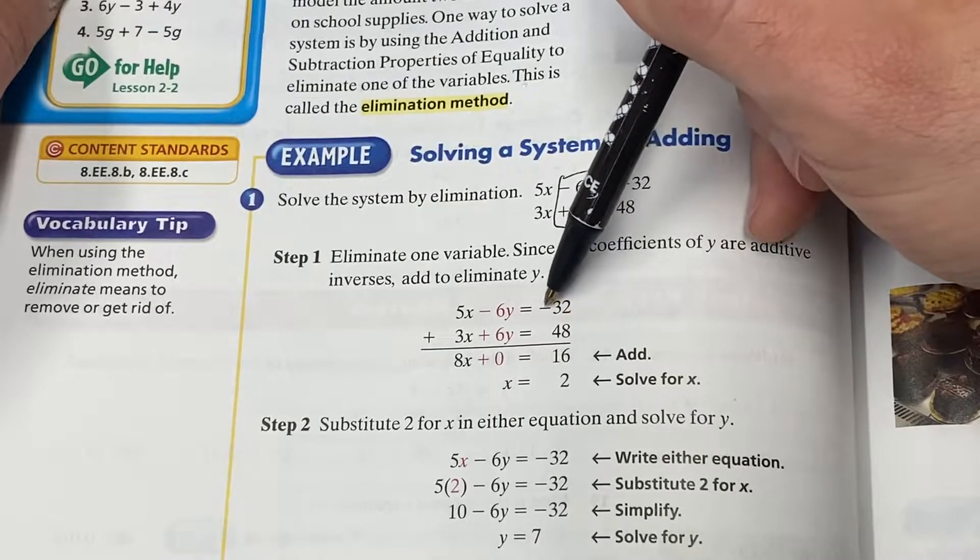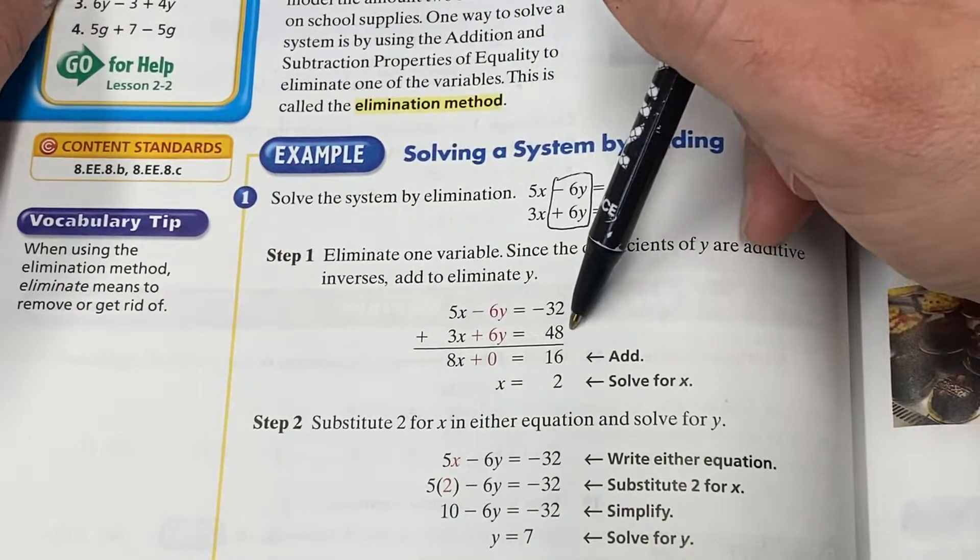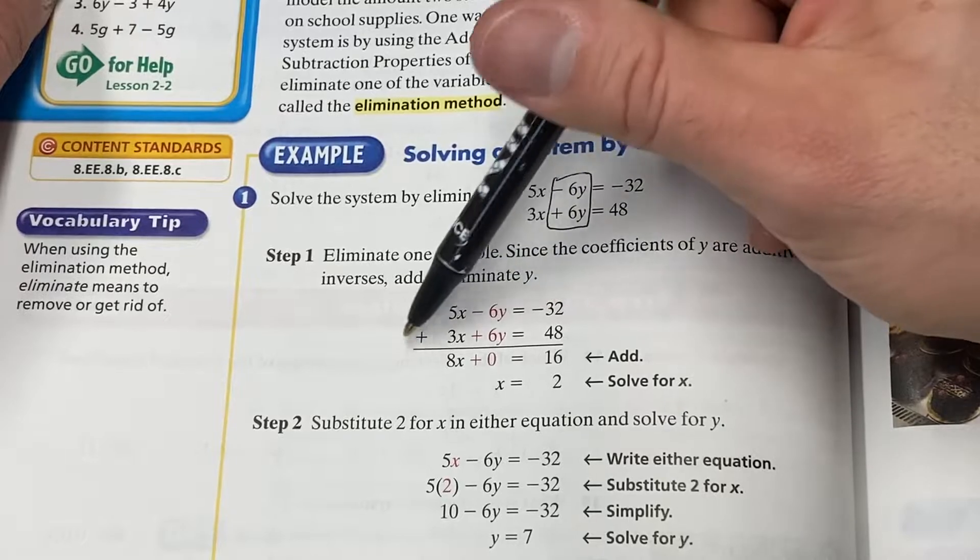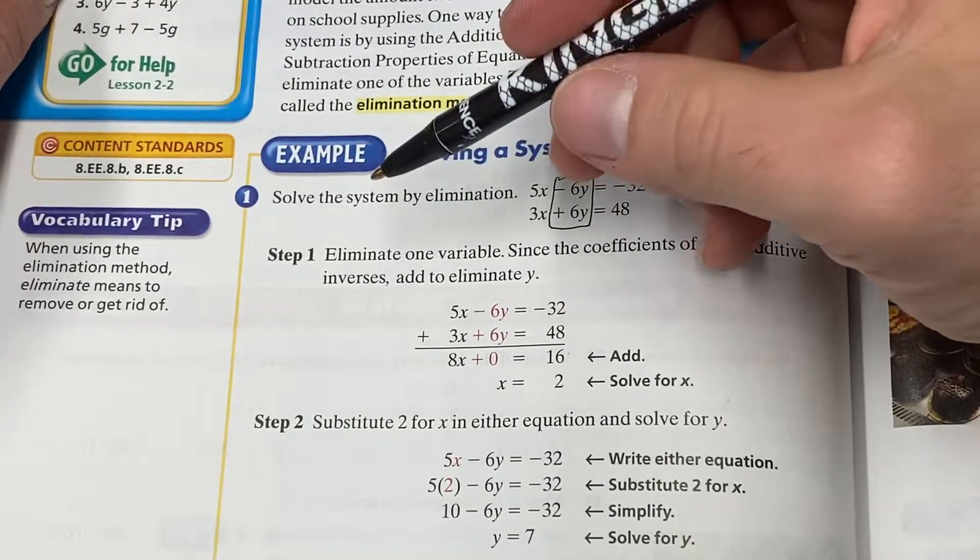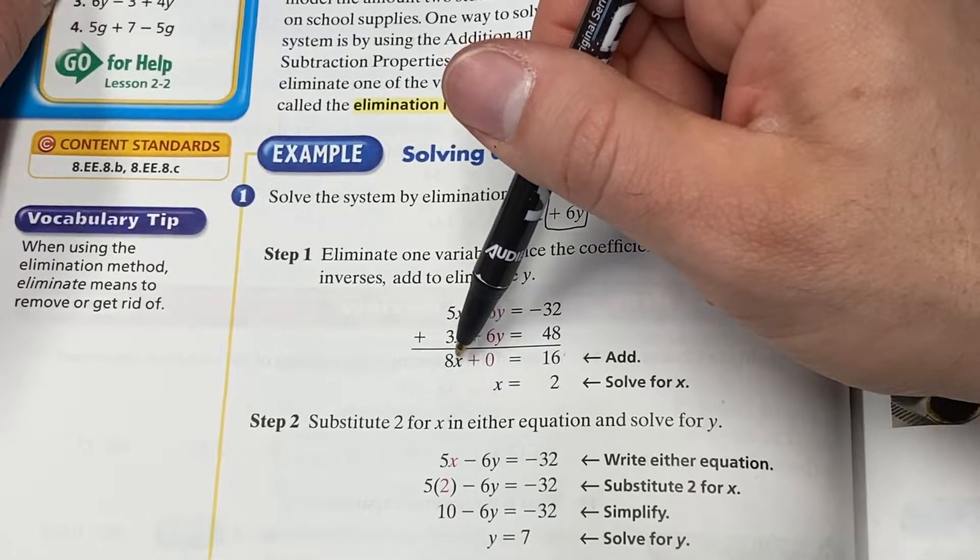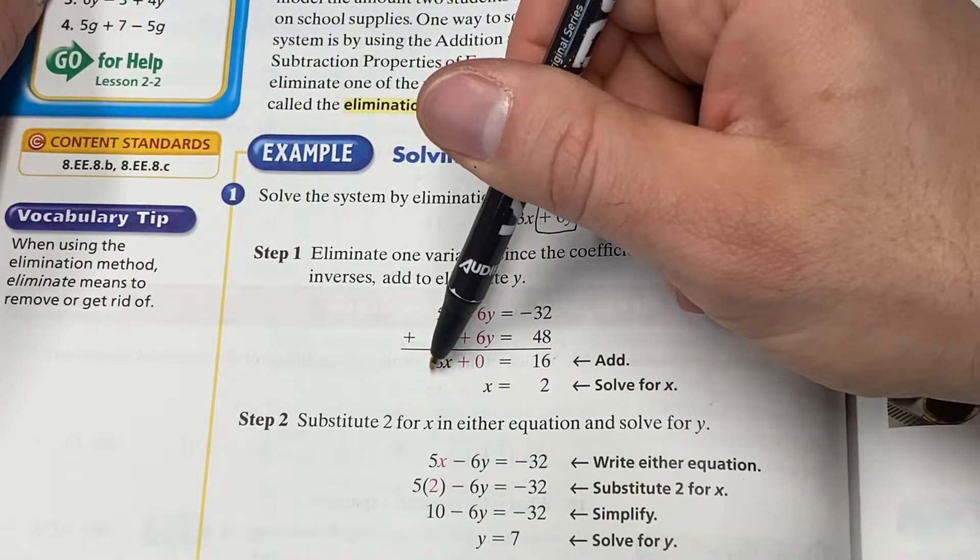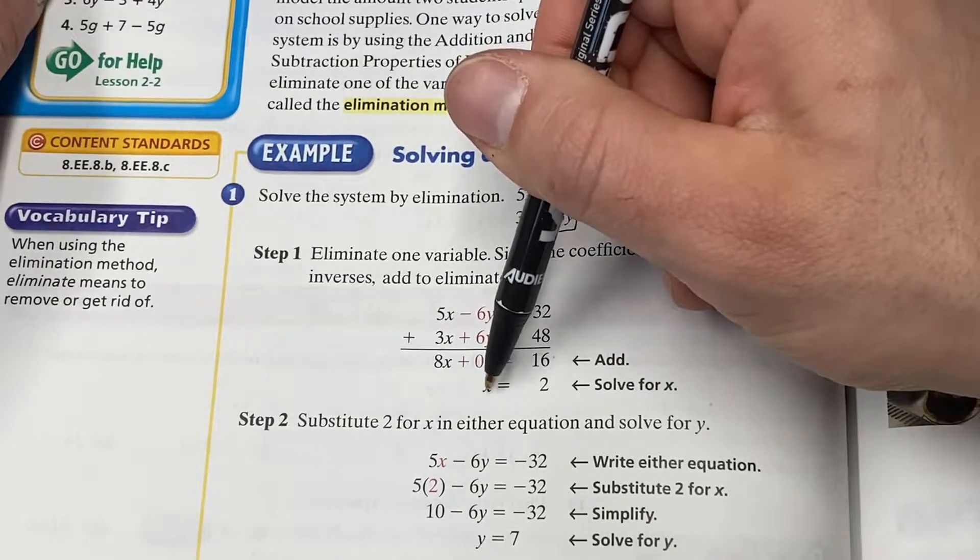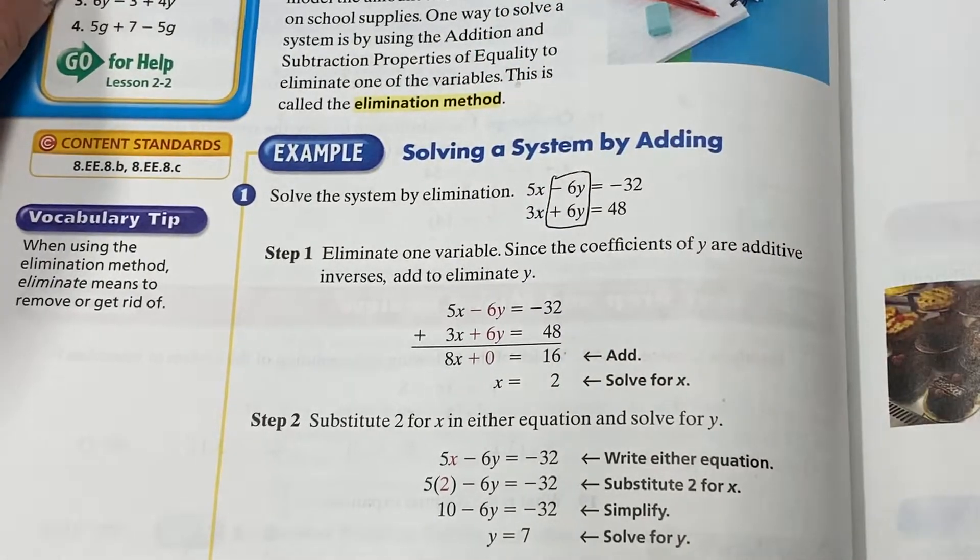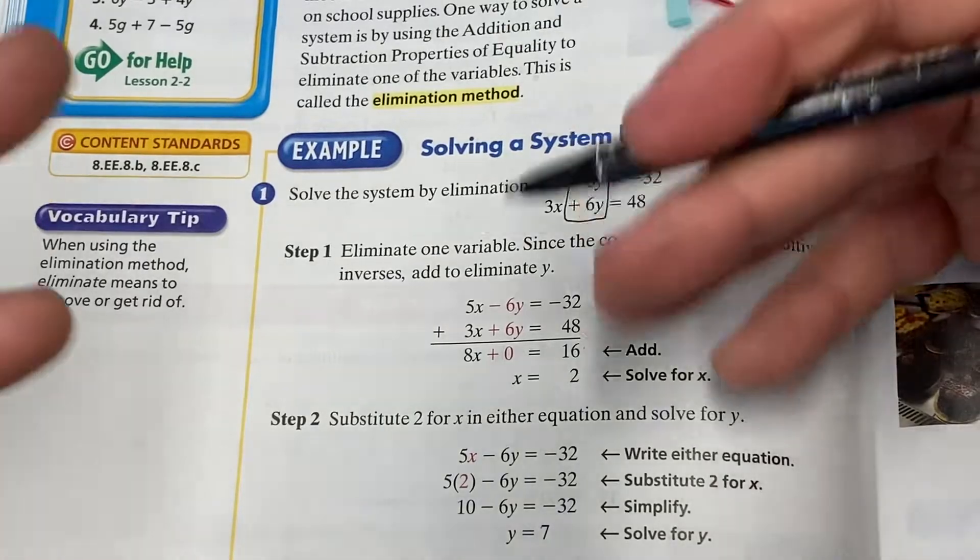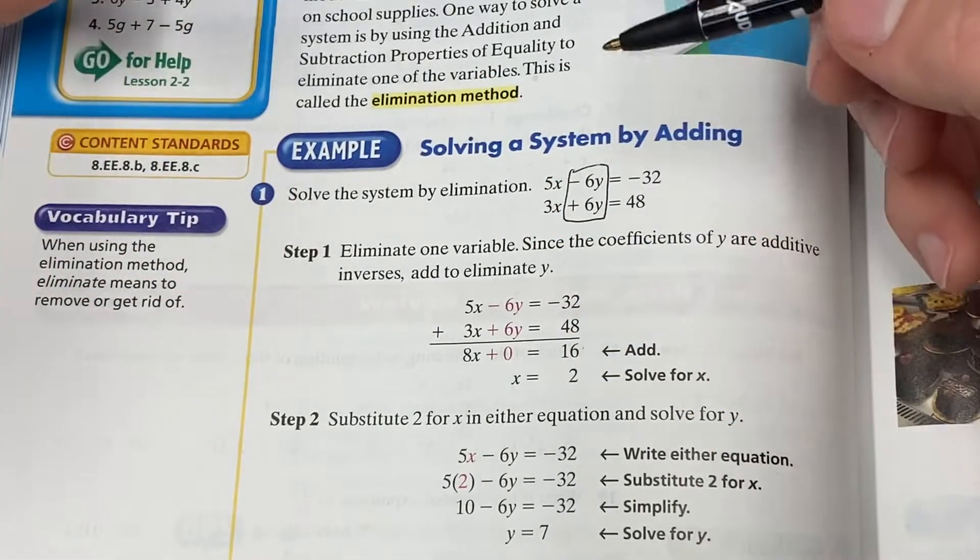Over here, you have to do negative 32 plus 48. Make sure you use your calculator. Negative 32 plus 48 is 16. So what we now have is that 8X equals 16. If you divide both sides by eight, X equals two. I'll do this over on a piece of paper in a minute and you'll see how the steps should look showing more of the work.